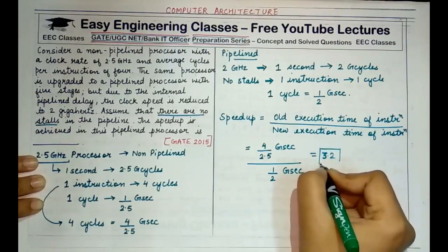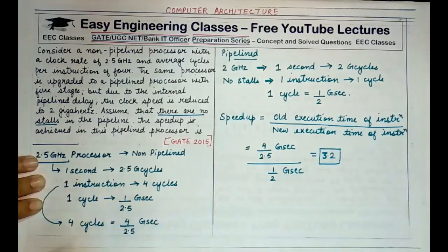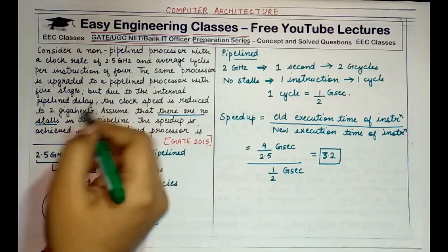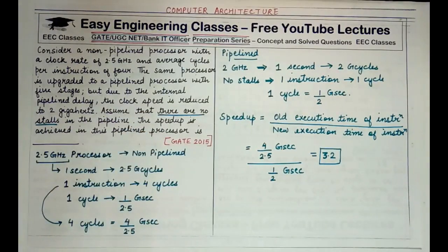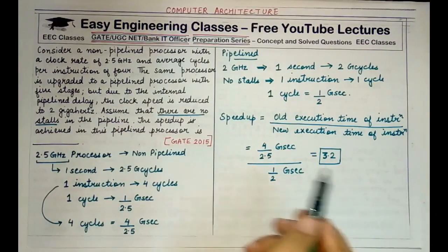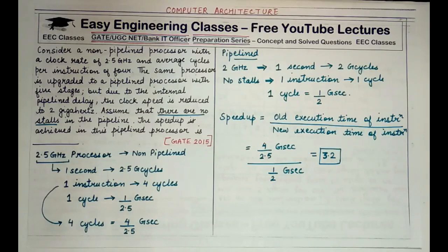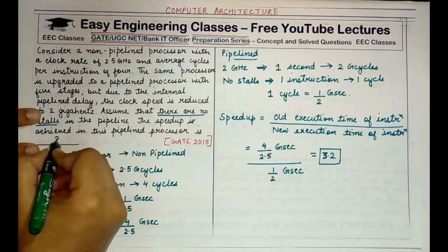This is the speedup value attained when you calculate correctly. There is a difference of 3.2 times between the old non-pipelined processor and the new pipelined processor. That's all for this question.